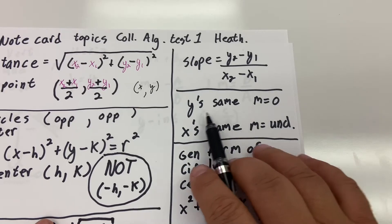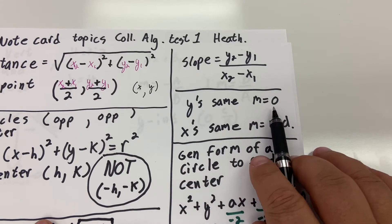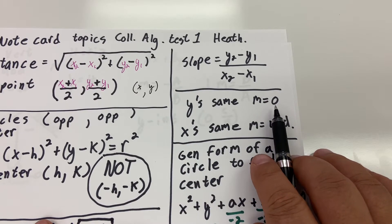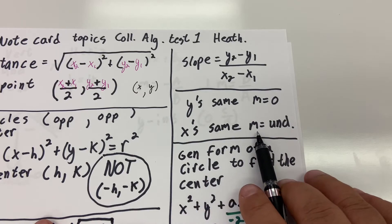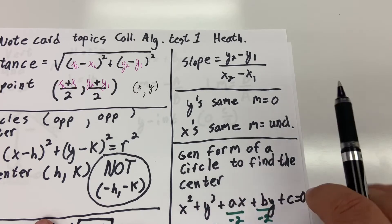If the y values are the same, then the slope is zero. If the x values are the same, then the slope is undefined.